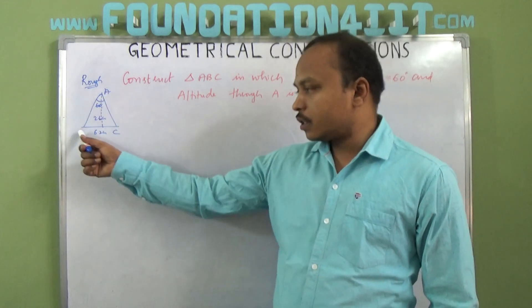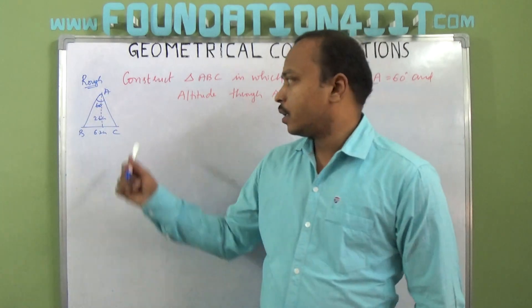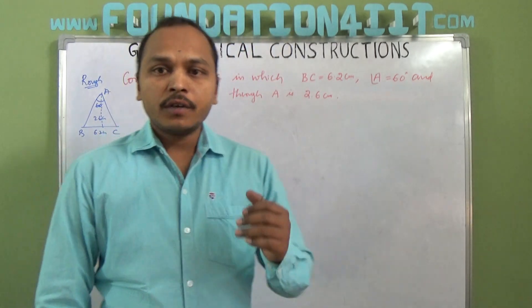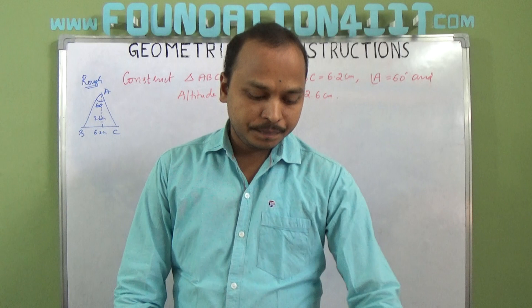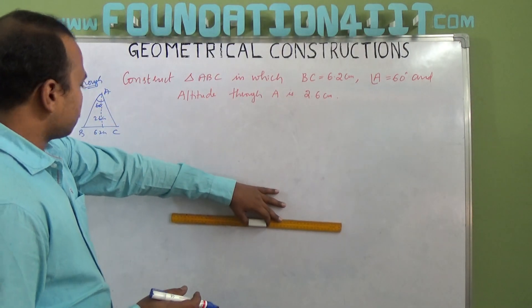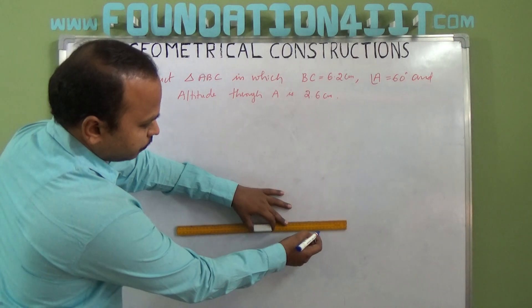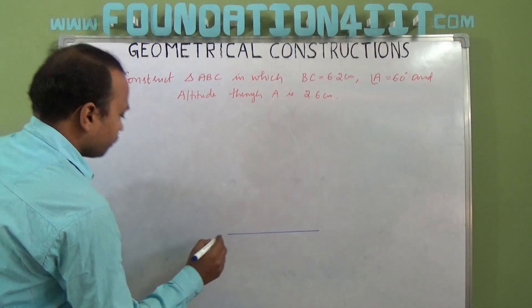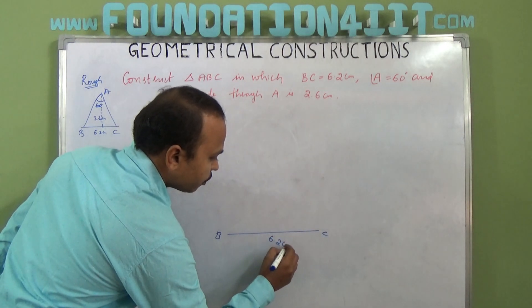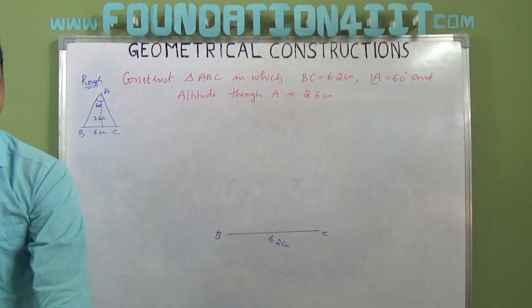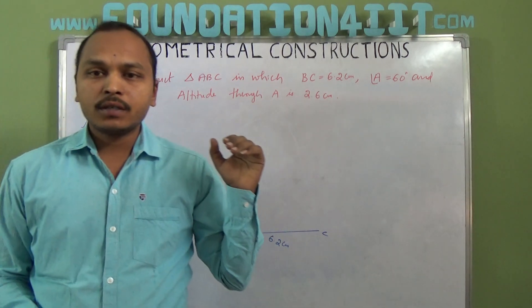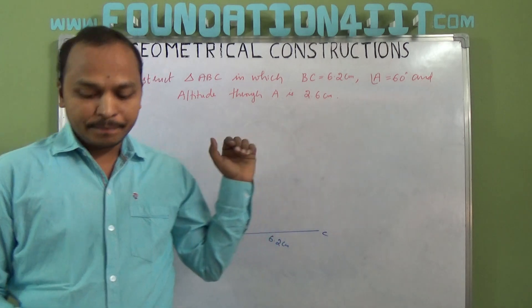To construct this triangle, first of all we'll draw the base BC because it's already given. Take BC equals 6.2 centimeters. Now we don't know exactly where point A is, but we know the angle at point A is 60 degrees.